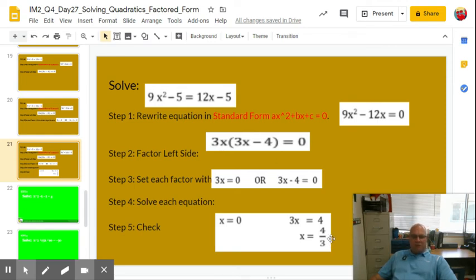Four-thirds is going to be a little bit more of a beast. We'd have to go 4/3 times 4/3, which gets us 16/9. Multiply that by nine, which gets 16. So then 16 minus five is 11. On the right side, 12 times 4/3, well that's going to become 16, and 16 minus five is 11. 11 equals 11. Check.